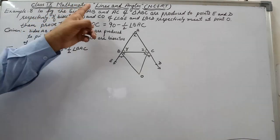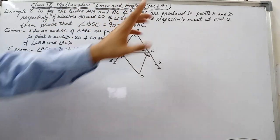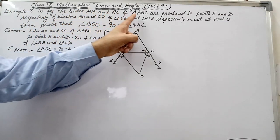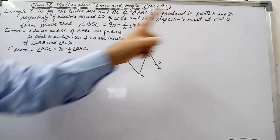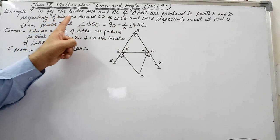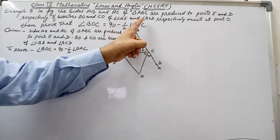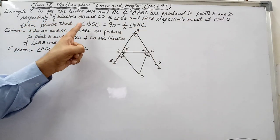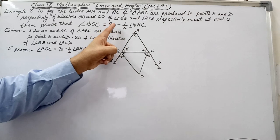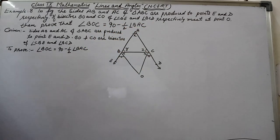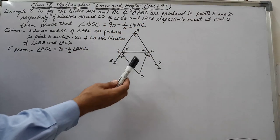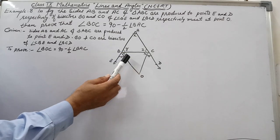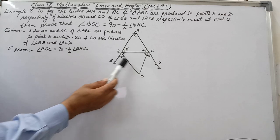This is Class 9 Mathematics, Lines and Angles chapter, Example 8. In the figure, the sides AB and AC of triangle ABC are produced to points E and D respectively. If bisectors BO and CO of angle CBE and angle BCD respectively meet at point O, then prove that angle BOC is equal to 90 minus half of angle BAC. In this question, BO and CO are the bisectors of these two exterior angles.